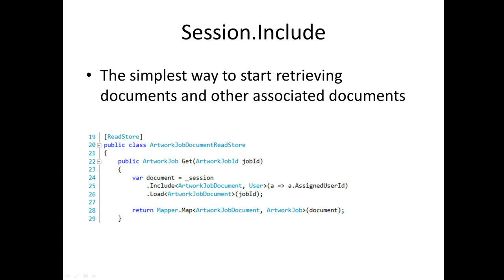So we saw before session.Load — the document we're loading, in this case it's a job document. What we're doing is also including as part of that load a user document, and that assigned user ID is on this document. So this document simply stores an ID — you could consider that the equivalent of your foreign key, but with no referential integrity, so it's more flexible. In one round trip it fetches your document plus the user. And that last line is just using AutoMapper to map this document to a DTO.